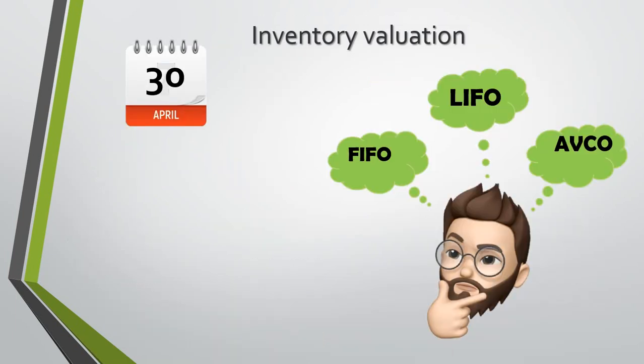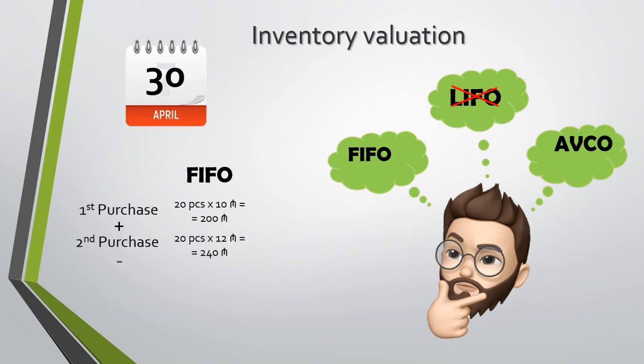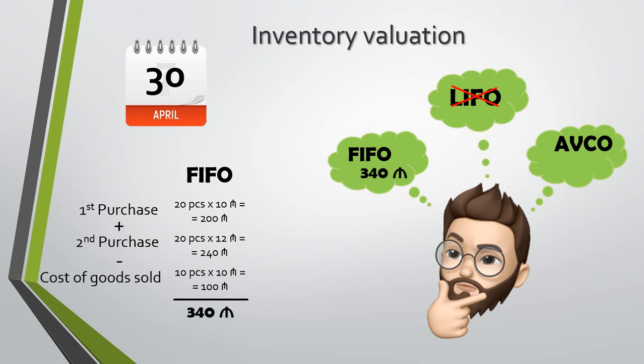Let's make a more detailed calculation. IFRS prohibits the use of the last-in, first-out method, so we'll ignore it. If we use the first-in, first-out method, we'll summarize the first purchase with the second purchase, then decrease by the amount of the sales cost. In this method, cost will be calculated at the price of the first purchase bulk until that bulk is finished, then cost will be calculated at the price of the second purchase bulk, and so on. In this case, the decrease will be calculated at 10 ASE per item, so our inventory amount will be 340 ASE.